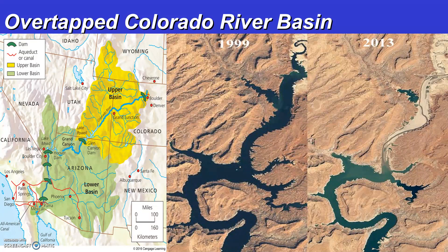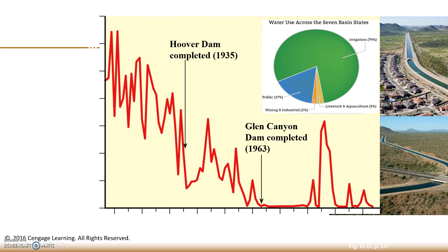This flow reduction will leave the Colorado River about 9% below its normal flow level that's supposed to be supplied downstream to Lake Mead for use in California, Nevada, Arizona, and Mexico. The Colorado River Basin is definitely one in which water allocation and water rights are stressed. Seven states rely on the Colorado River, and 79% of the water drawn from the river is used for irrigation in agricultural industries, about 17% for public drinking water, 3% for livestock and aquaculture, and 2% for mining and industry — meaning about 82% goes to agricultural use overall.